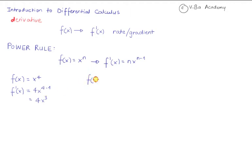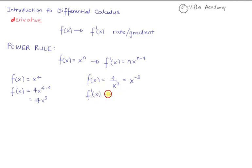Let's look at another example where f of x is equal to 1 over x cubed. This is slightly different — easy but different. As this function stands, I cannot apply the power rule because the power rule is only defined when I have a single power of x and nothing else. So my first task is to convert this function so that it is in the form of a single power of x, and I can do that by expressing this as x raised to negative 3. You will recall from exponentials that when I pull a power from the denominator up, I just need to flip the sign of the exponent. Now I can apply the power rule: f prime of x is negative 3 times x raised to negative 3 minus 1, which gives me negative 3 x raised to negative 4.